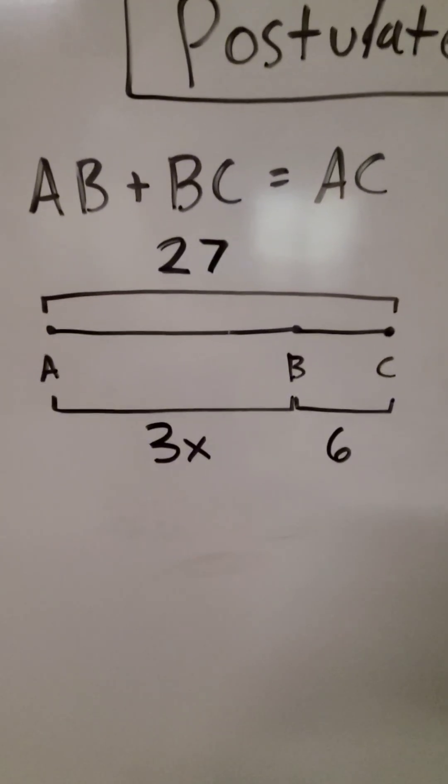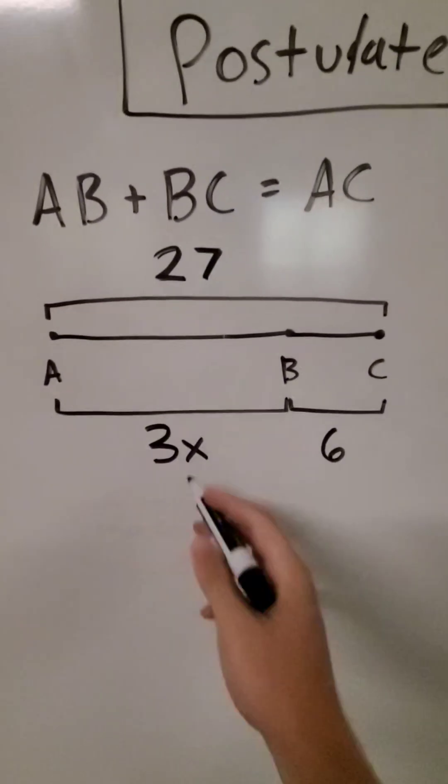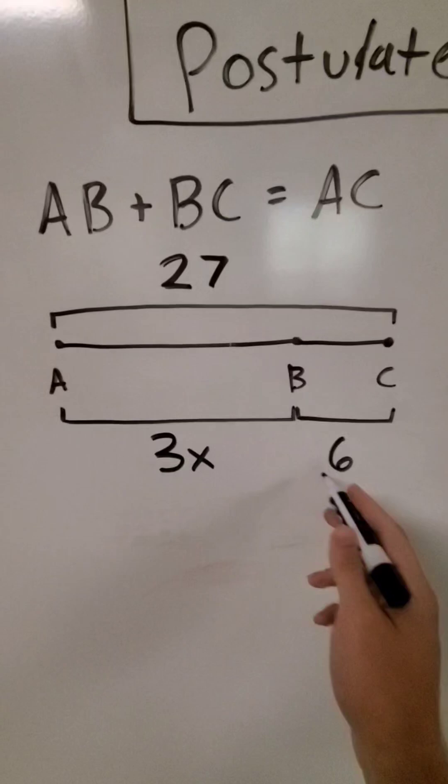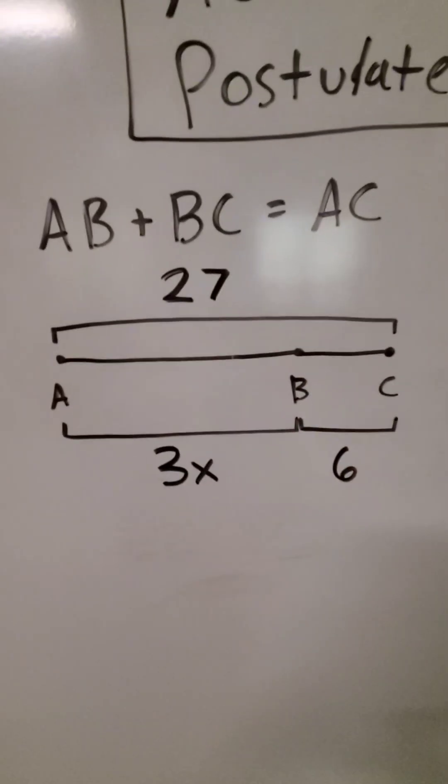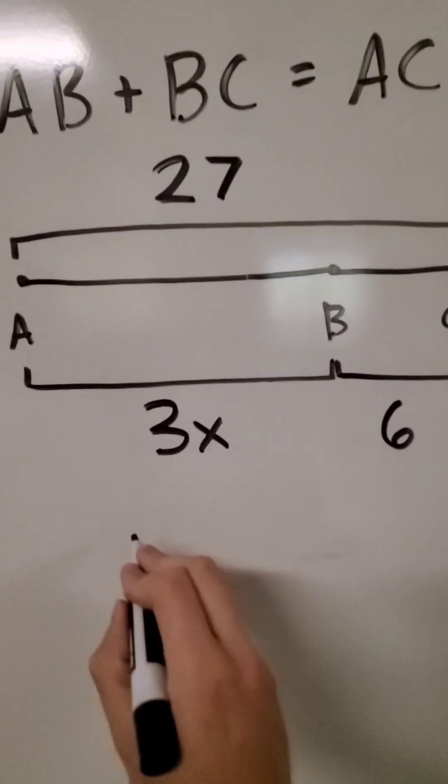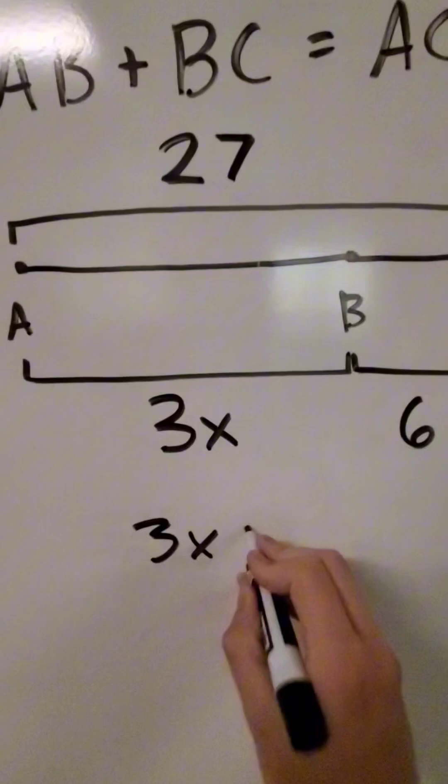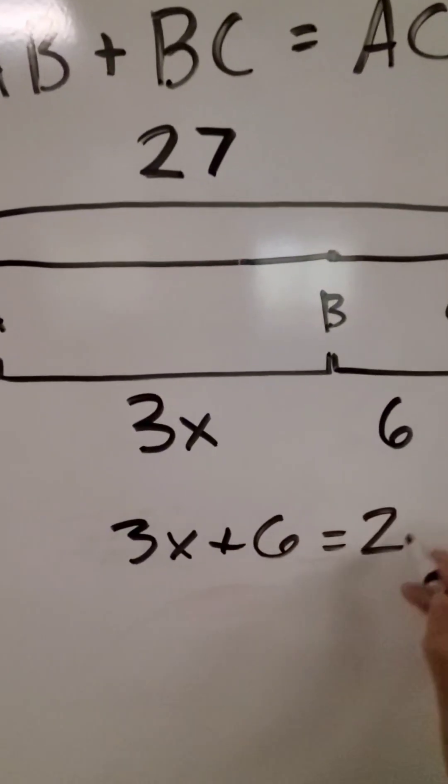We can also do algebra with the segment addition postulate. Here we have 3x and 6 as the two parts and 27 as the whole. So we can write ourselves an equation: 3x plus 6 equals 27.